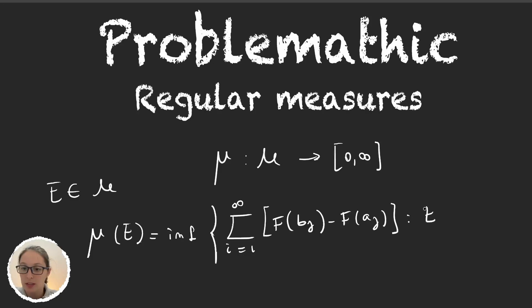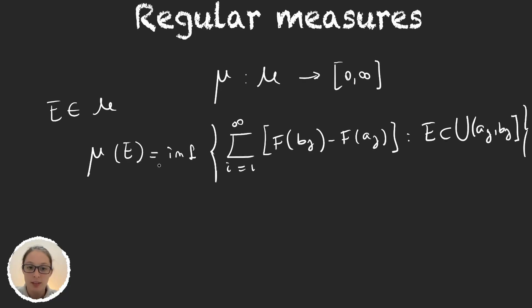Where E is covered by the union of the intervals. In the last video we wrote it with a closed interval on the extreme b, but it can be proven that this is the same as the sum from i equals 1 to infinity.